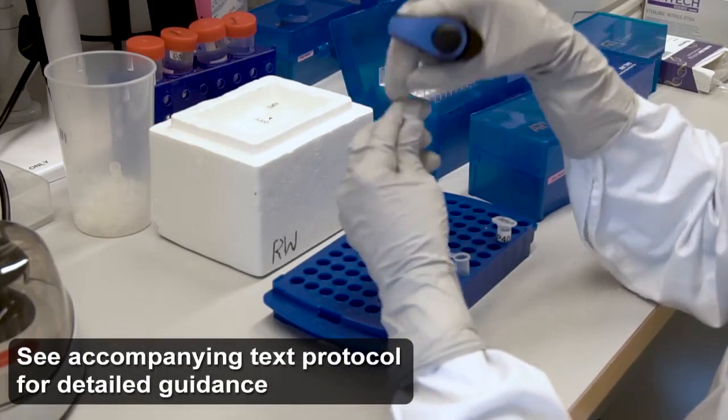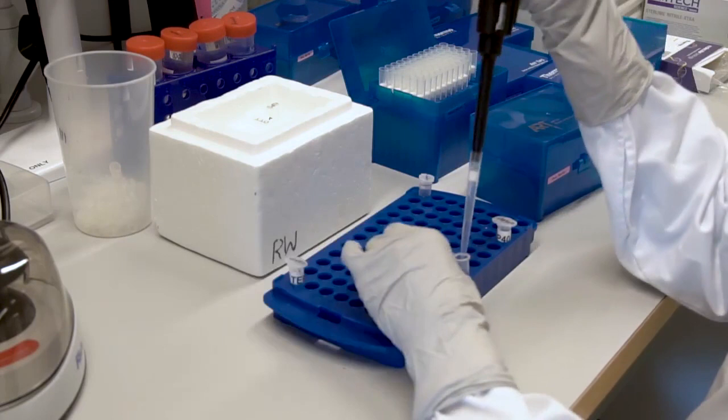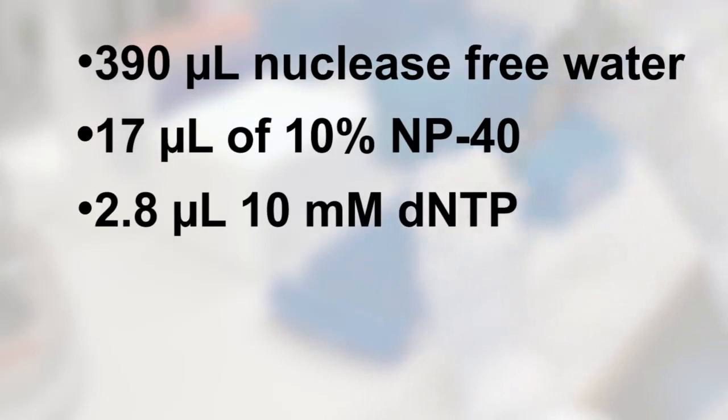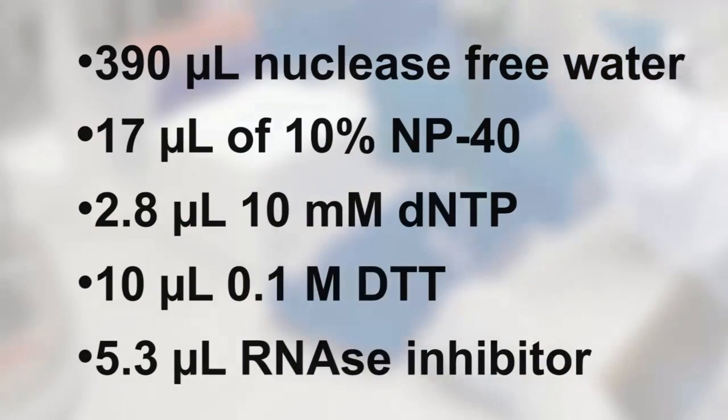To begin the protocol, on an RNA-DNA-free bench, prepare enough lysis buffer for 96 wells, with 10% extra, by mixing 390 microliters nuclease-free water, 17 microliters of 10% NP40, 2.8 microliters 10 millimolar dNTP, 10 microliters 0.1 molar DTT, and 5.3 microliters RNase inhibitor. Vortex and spin down the tube.